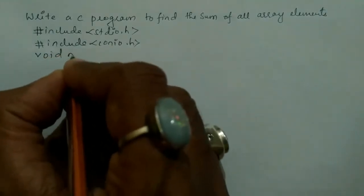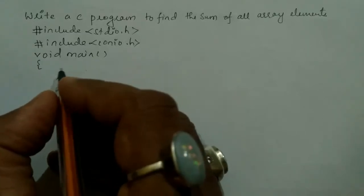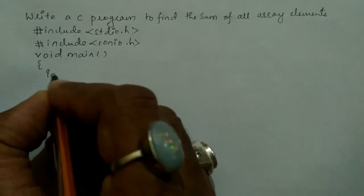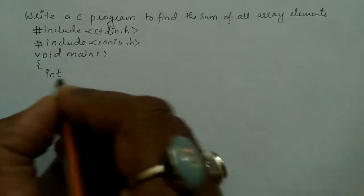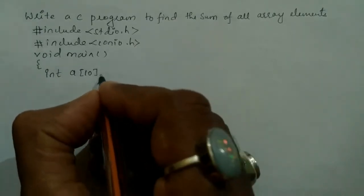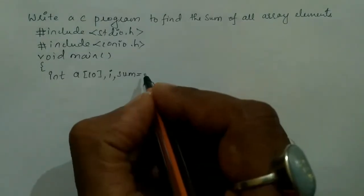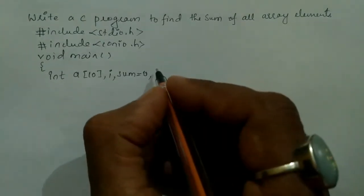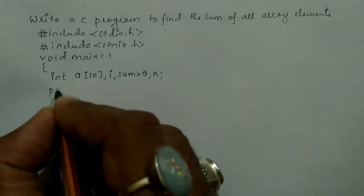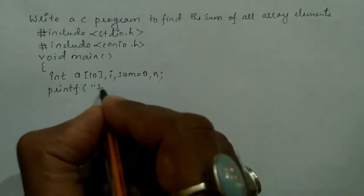We write the void main function with an opening curly brace. Here we declare all the necessary variables: data type int, array a of size 10, comma i, sum is equal to 0, and n.